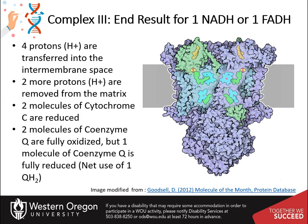The net energy coming in from one molecule of NADH at complex I or FADH2 at complex II will cause complex III to shift four protons into the inner membrane space and remove two additional protons from the matrix. It will also reduce two molecules of cytochrome C and fully oxidize a total of one coenzyme Q molecule, since the Q cycle oxidizes two but then reduces one coenzyme Q.